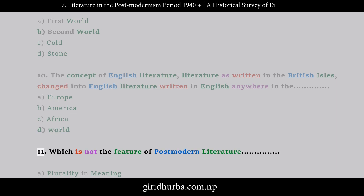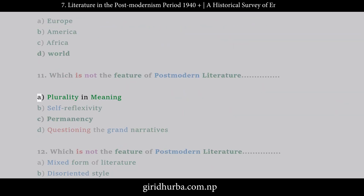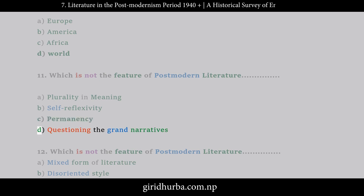Question 11: Which is NOT the feature of postmodern literature? A. Plurality in meaning. B. Self-reflexivity. C. Permanency. D. Questioning the grand narratives.